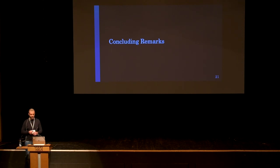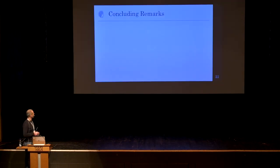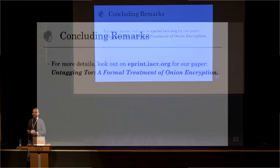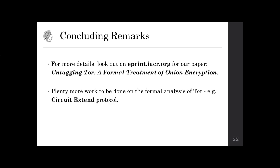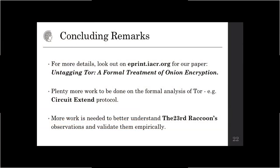Some concluding remarks: look out on ePrint for our paper which should be coming up soon. There is plenty more work to be done on formal analysis of Tor. Unfortunately TLS takes all the attention, but Tor is the main tool for anonymity. An obvious next step is to look at the circuit extend protocol, which we did not cover in our work. I think there's also interesting possibility of trying to better understand and empirically validate the observations made by the 23rd Raccoon.